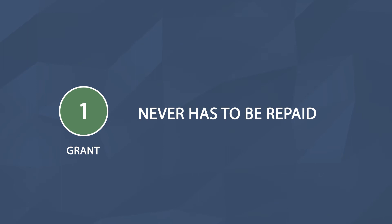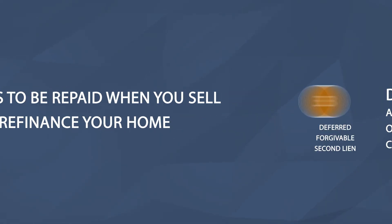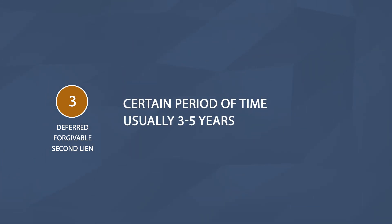A grant never has to be repaid. A second lien typically has to be repaid when you sell or refinance your home. And a deferred forgivable second lien does not have to be repaid as long as you stay in your home or do not refinance for a certain period of time, usually between 3 and 5 years.